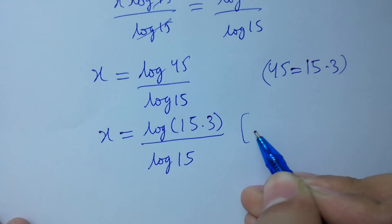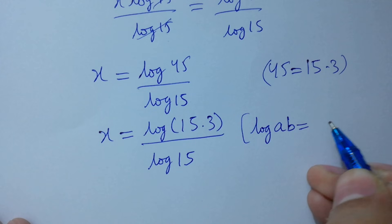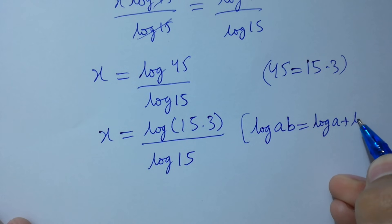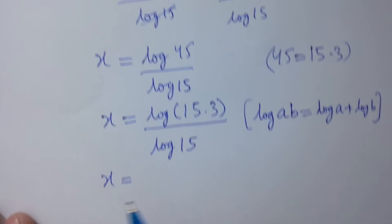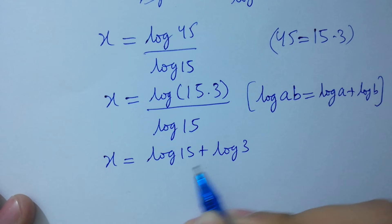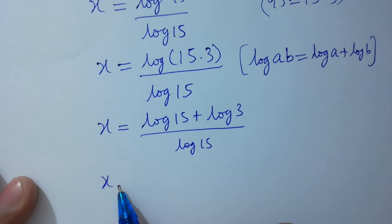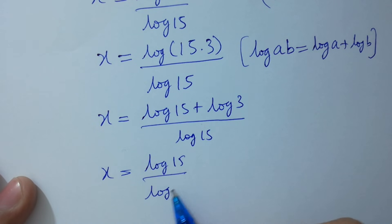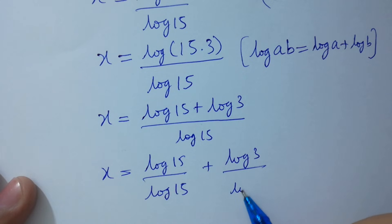Since log a b equals log a plus log b, so we have x equal to log 15 plus log 3, over log 15. Which gives x equal to log 15 over log 15 plus log 3 over log 15.